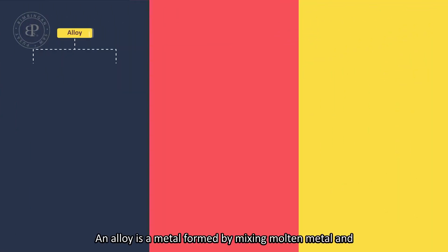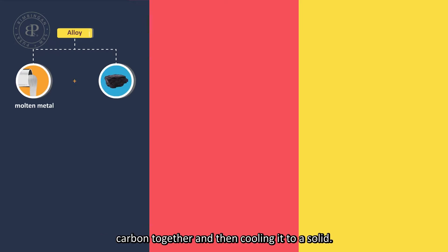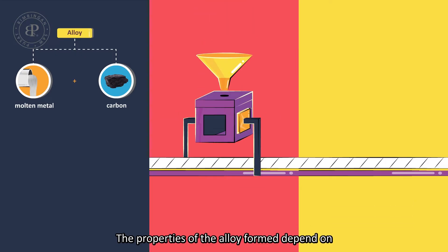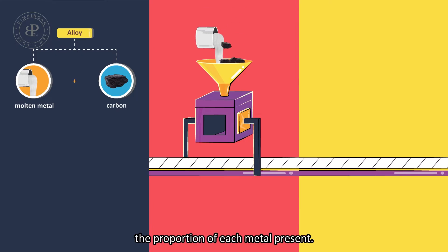An alloy is a metal formed by mixing molten metal and carbon together, and then cooling it to a solid.